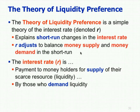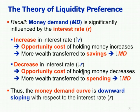The interest rate is a payment to money holders for supply of their scarce resource — liquidity. Money demand is significantly influenced by the interest rate: an increase in the interest rate means the opportunity cost of holding money increases, so more wealth is transferred to savings, which lowers money demand. A decrease in the interest rate means the opportunity cost of holding money decreases — you might as well hold more money. More wealth is transferred to spending, increasing money demand. Therefore the money demand curve is downward sloping with respect to the interest rate.